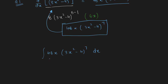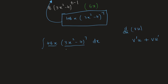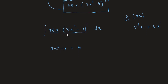We don't yet have a product rule in integration like we do in differentiation. But if we observe carefully and consider (3x² - 4) as our substitution — let's call it t — we can work with a new variable.